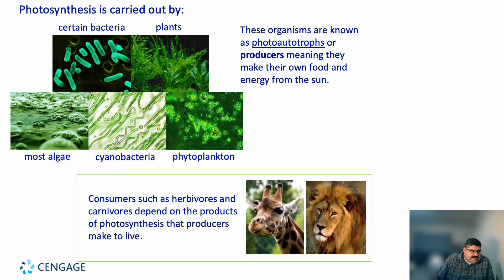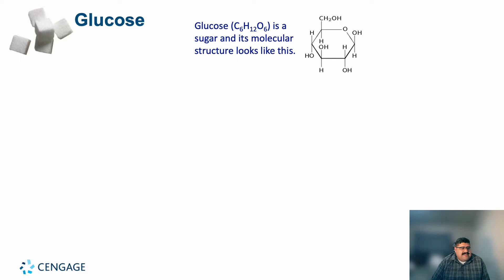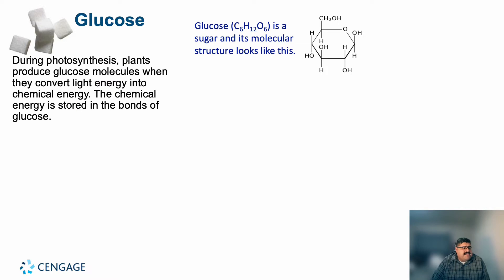Consumers such as herbivores and carnivores depend on the products of photosynthesis that producers make to live. A lot of animals in the animal kingdom just eat plants — that's what provides them with the nutrients they need. Glucose, C6H12O6, is a sugar molecule, and its molecular structure is a six-carbon molecule.